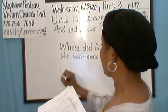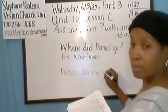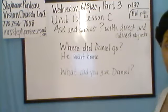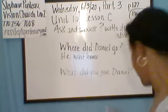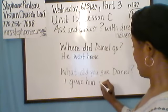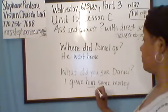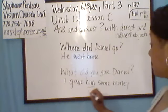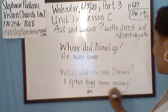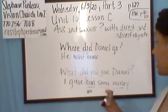Another sentence: What did you give Daniel? The answer is: I gave him some money. I used 'him' because in this sentence there are objects. 'Him' is the indirect object because he received some money. 'Some money' is the direct object. Remember: the direct object answers the question 'what,' and indirect answers 'who.'